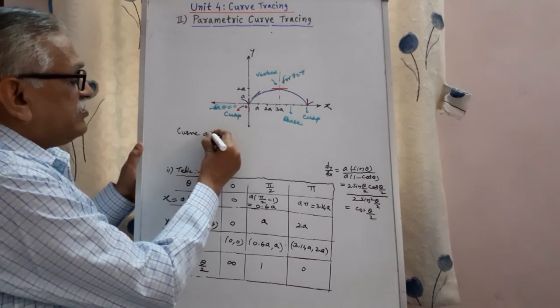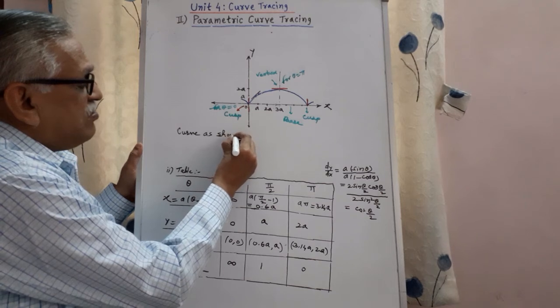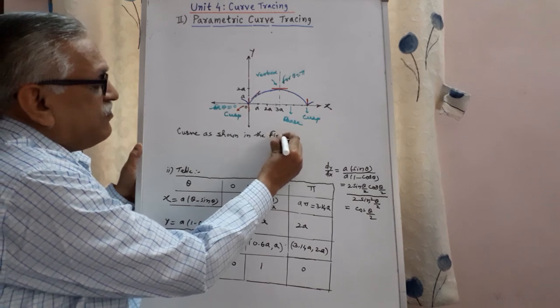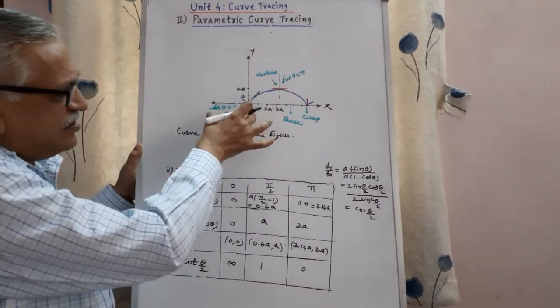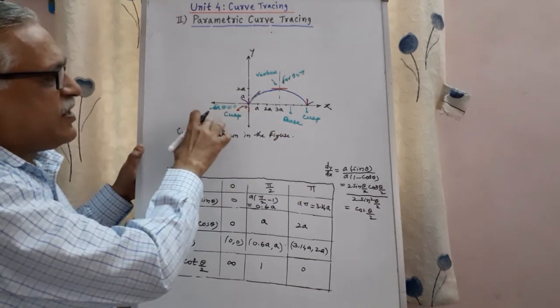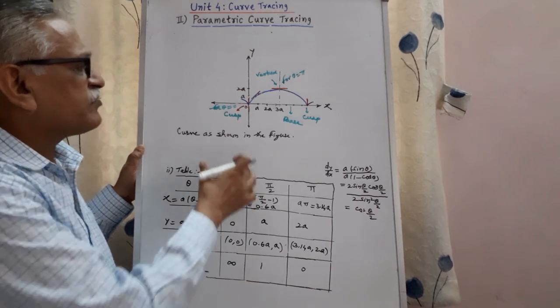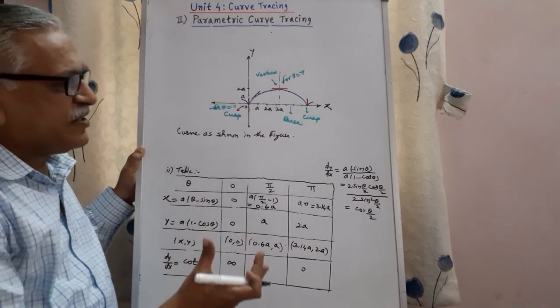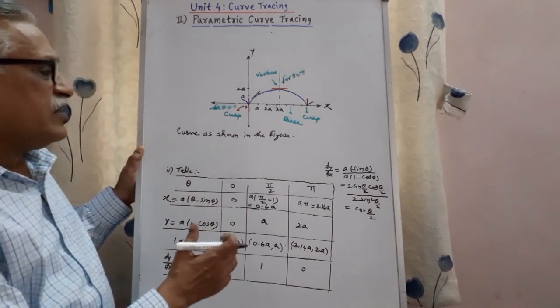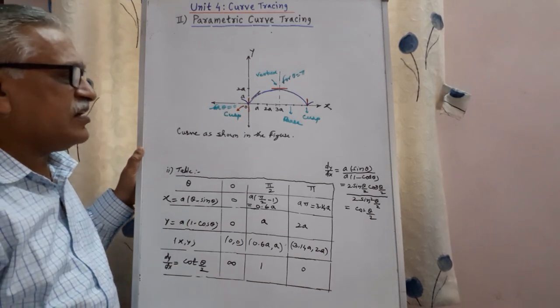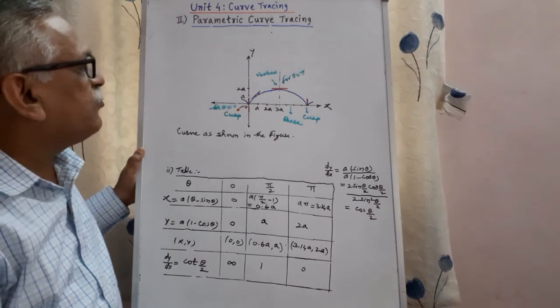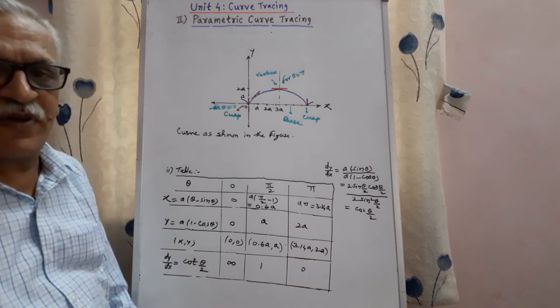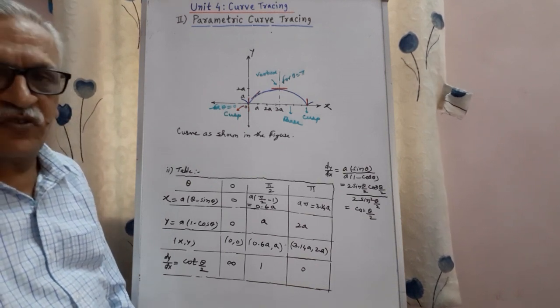Therefore this is the curve as shown in the figure. Curve as shown in the figure. Therefore this is another cycloid. In the previous part I have explained one more, therefore total I have explained two out of four. Therefore using this you can complete the remaining two. In my next video I will go for the third type, polar curve tracing. Therefore if you are watching my videos please like and share it as well as subscribe to my channel. Thank you, thank you very much.